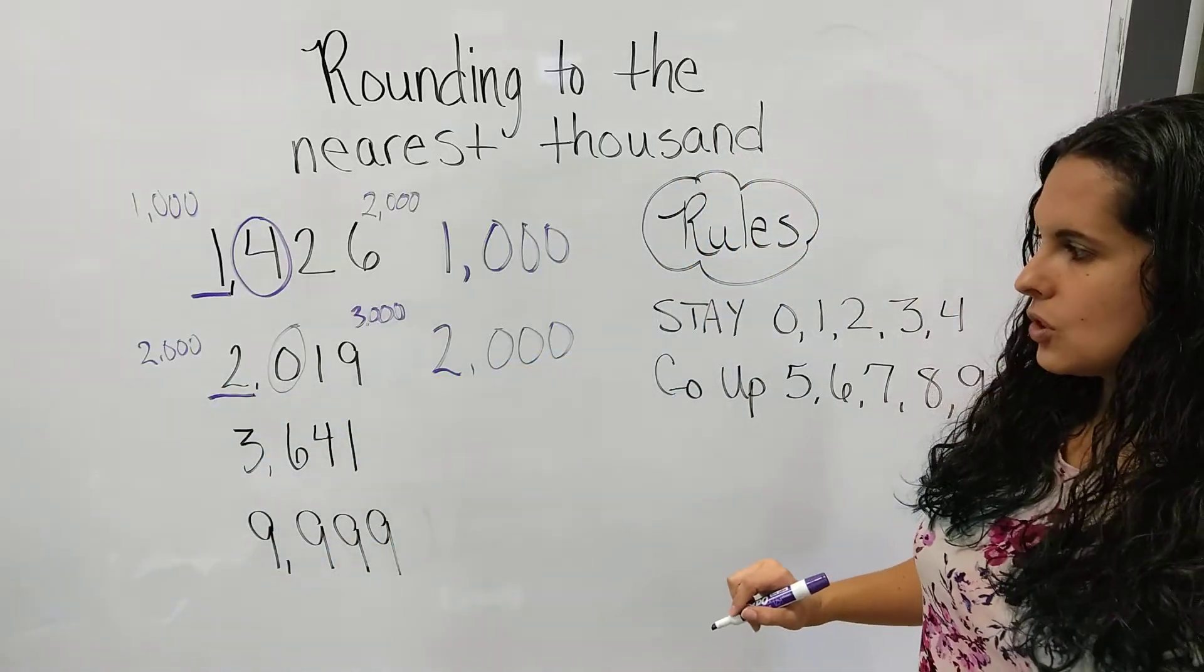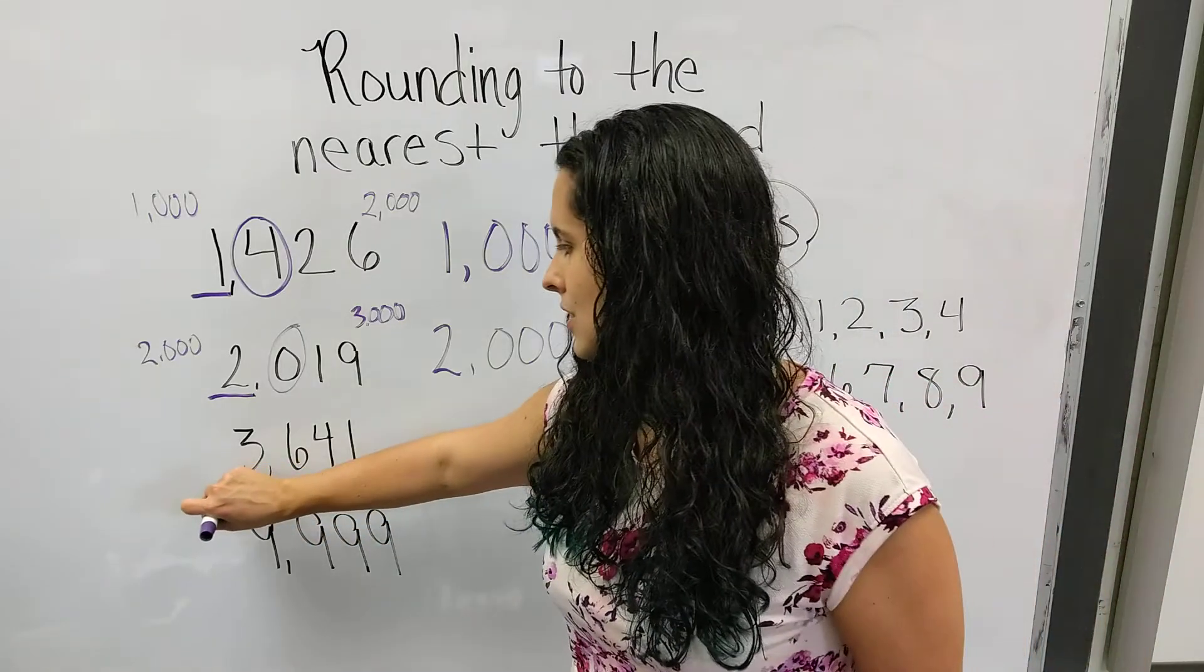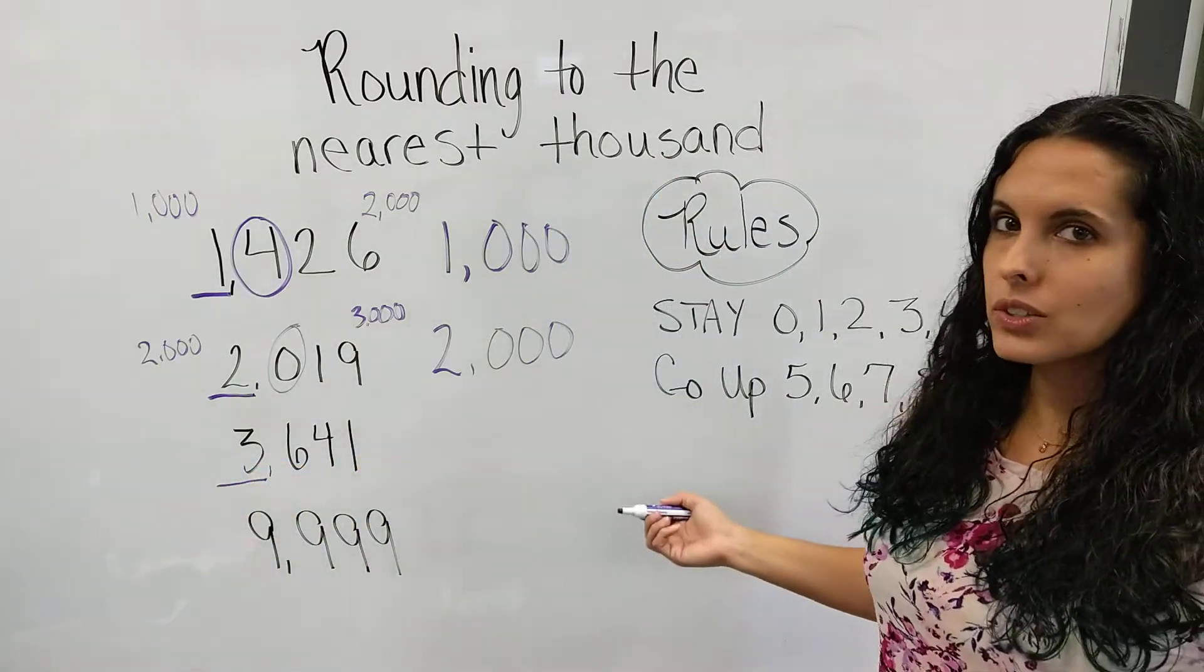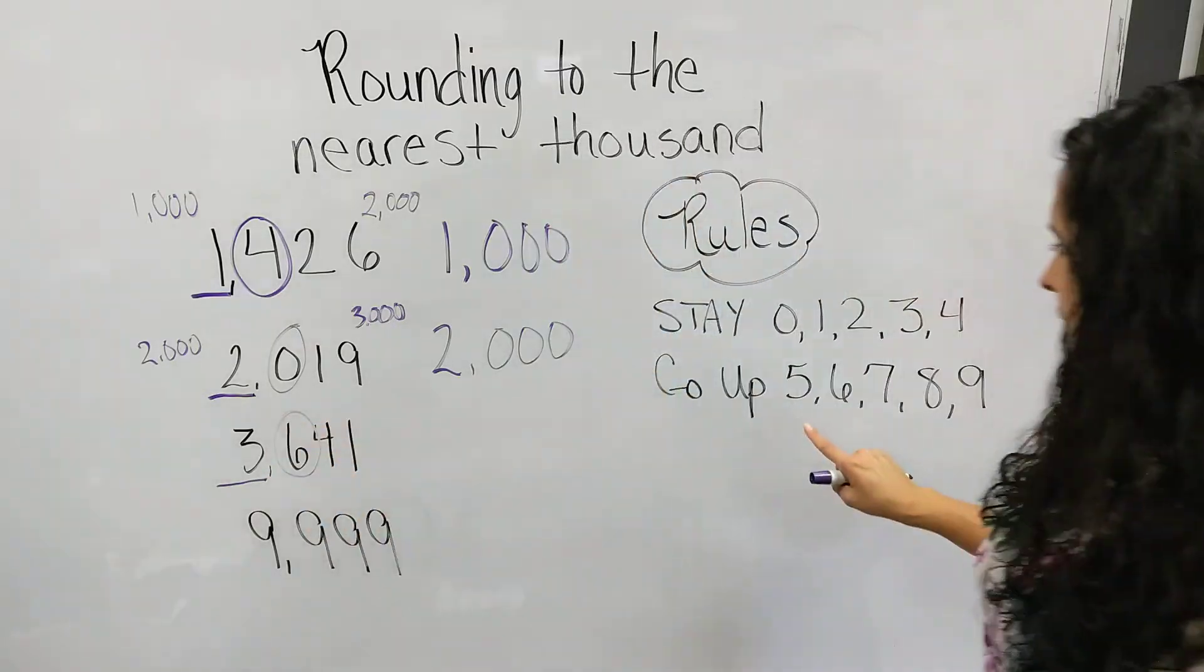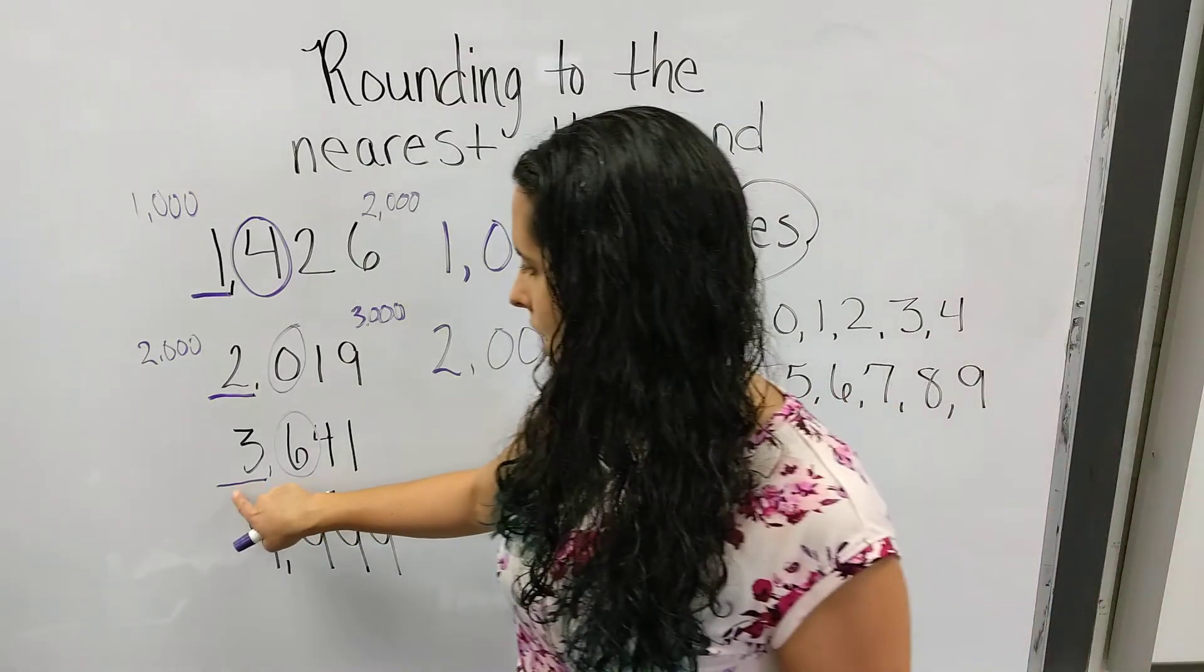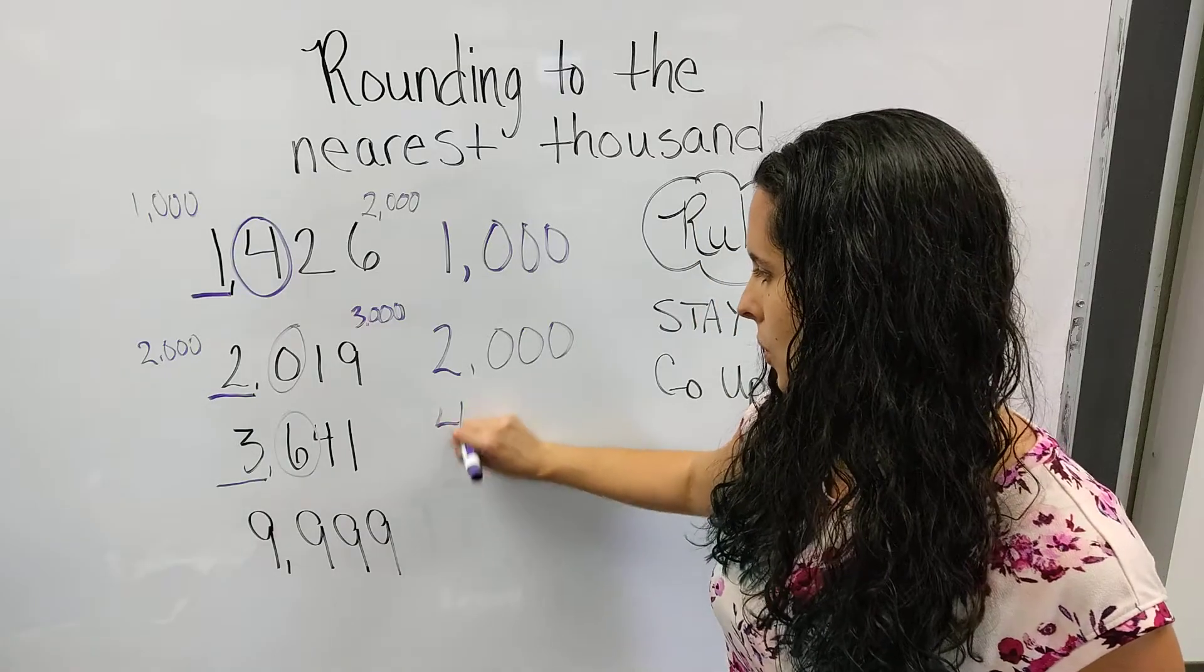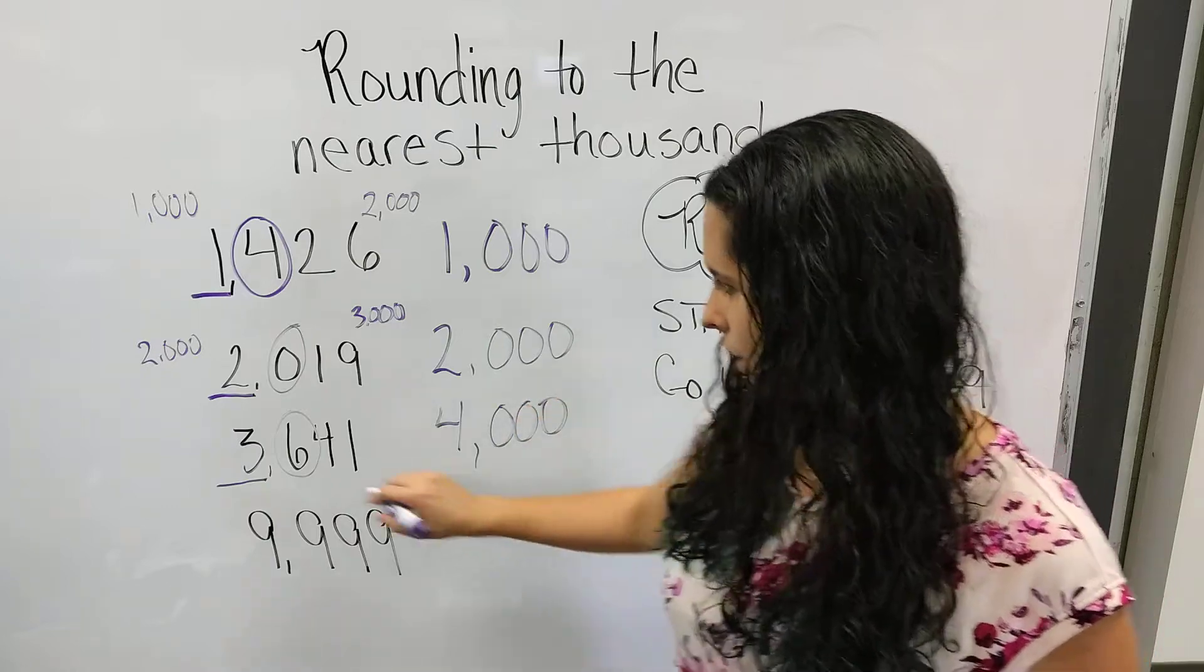Our next example is 3,641. We're rounding to the nearest thousand, so we underline the thousands place. We want to circle the number behind it. That's called your bossy number. It's a 6. 6 says go up, so it's going to tell the 3 to go up. The next counting number after 3 is 4. So 3,000 rounds to 4,000 here.